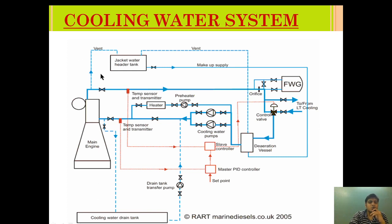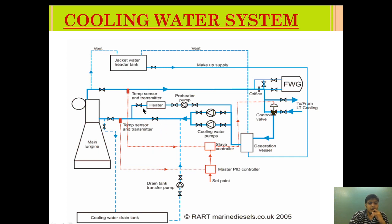This system is called the high temperature cooling circuit, and this pump is called the high temperature cooling pump — the HT system. The LT system provides cooling for the lube oil cooling system, piston cooling system, and also the auxiliary cooling system. The heater here is doing the same thing as in the earlier diagram — maintaining the necessary temperature when the engine is in a standstill condition. A pre-heater pump is provided for circulation. I hope you understand the modified advanced diagram of the cooling water system.